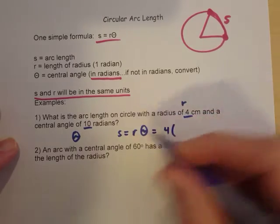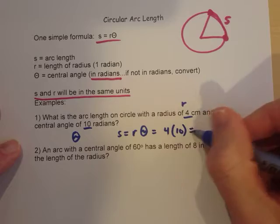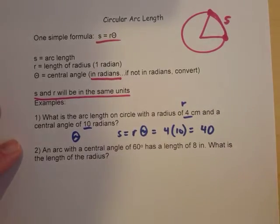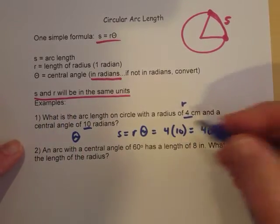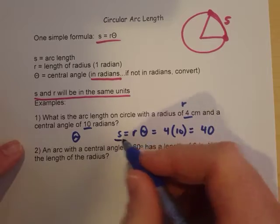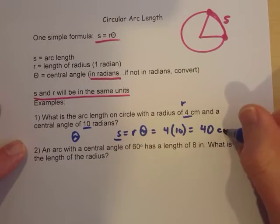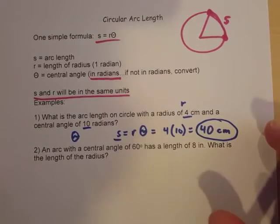R is 4. Theta is 10. So it's just really 4 times 10. Pretty simple problem. Makes it 40. Now, 40 what? Remember that S and R will be in the same units. So R is 4 centimeters. That means S, which is our problem here, is going to be in centimeters also. So 40 centimeters will be the arc length for that particular problem.